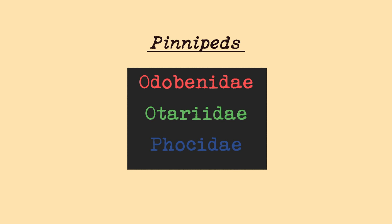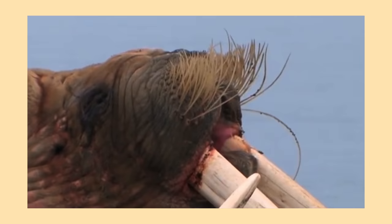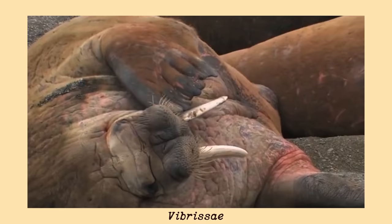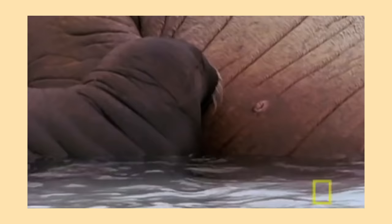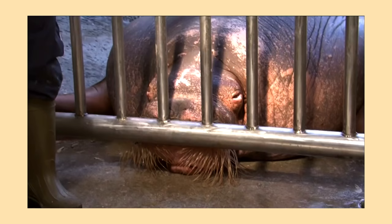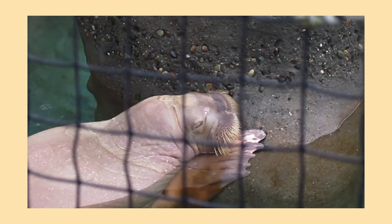Odobenidae used to be a big family until it stopped, and the only one left was the walrus. There's only one species of walrus — the walrus. You know what a walrus is? The sixth most popular W animal ever? If you don't, identifying a walrus is pretty simple. They've got mustaches made of vibrissae, which is the science word for whiskers. You could also look for tusks, which are just their canine teeth.